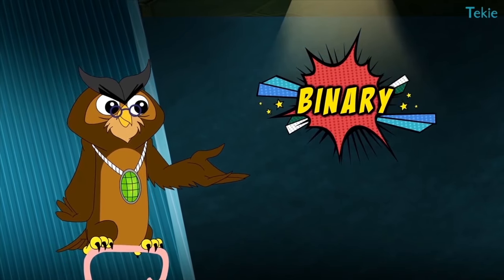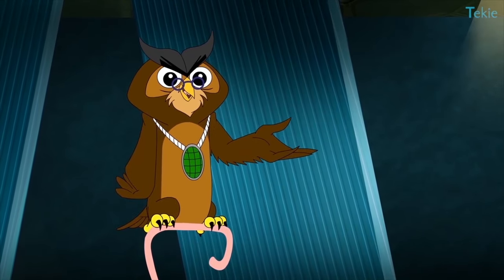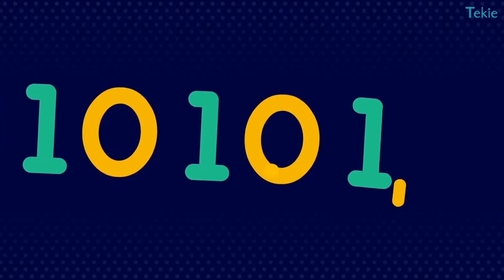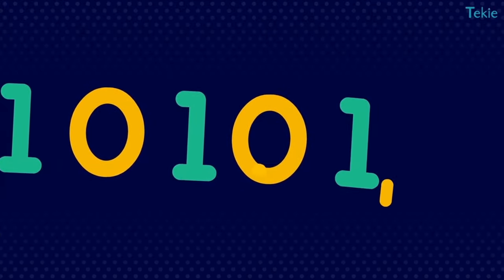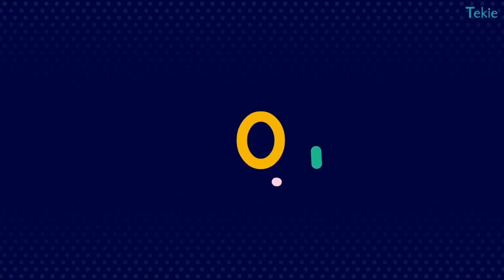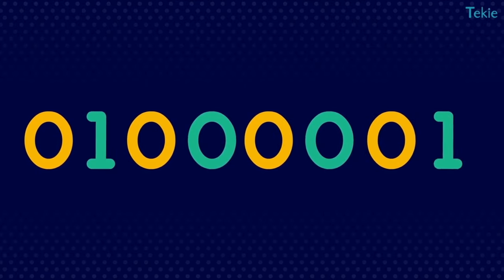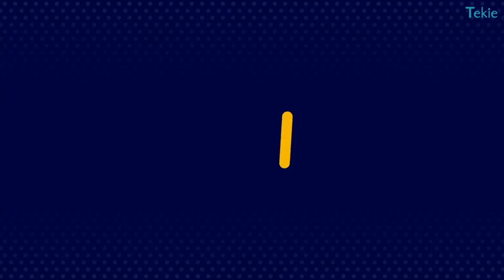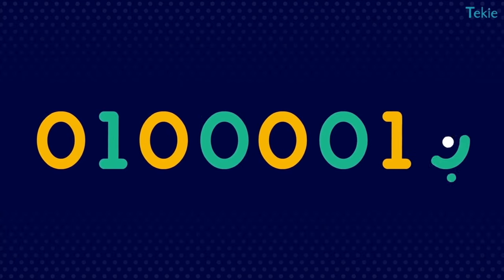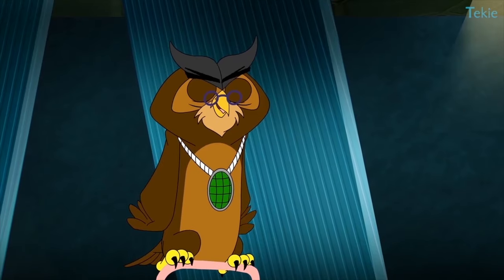We call them binary digits. But how can I talk with just two numbers? For now, understand it this way — computers use a combination of zeros and ones to identify alphabets and numbers. Like it identifies the alphabet A as 01000001, B as 01000010, and so on. Do I need to learn them all?